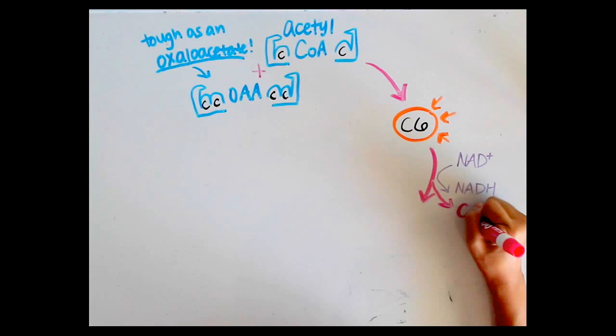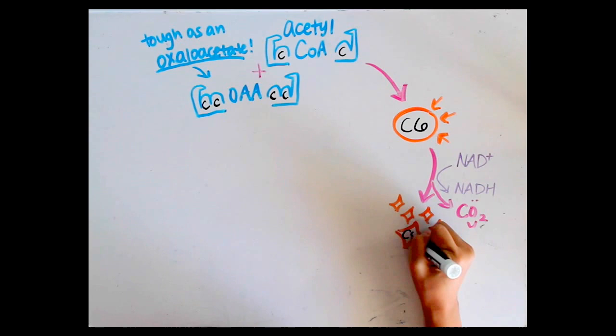Enzymes work on citric acid and remove a CO2. Other enzymes modify and oxidize it too, and then it becomes a 5-carbon compound.